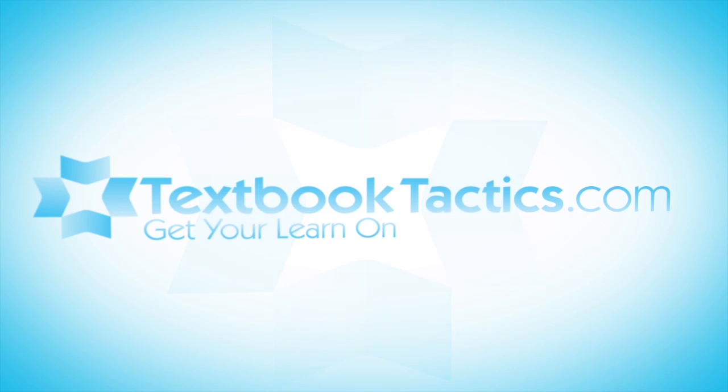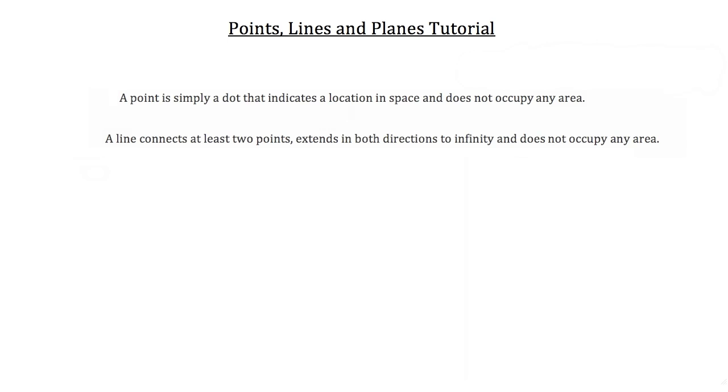This is the tutorial on points, lines, and planes. Let's talk about those first two items for a moment. A point is simply a dot that indicates the location in space and does not occupy any area. While a line connects at least two points, extends in both directions to infinity, and does not occupy any area.